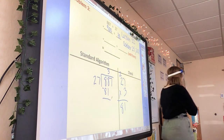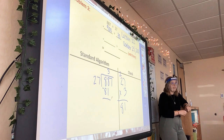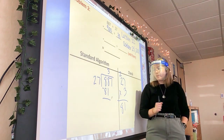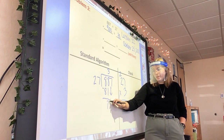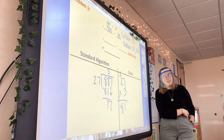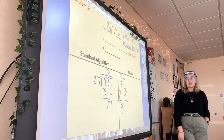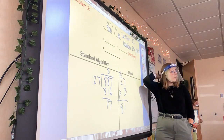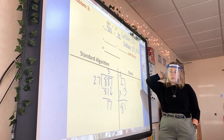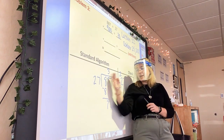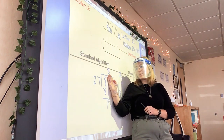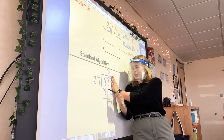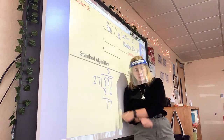Then we subtract. What did you get for 88 minus 81? 7. Bring it on down. So 77 is now our new number — it's like our remainder. We said 27 does not go into 8, but it does go into 88. So we're ignoring the ones place right now — we bring down the 7 and we've got 77.